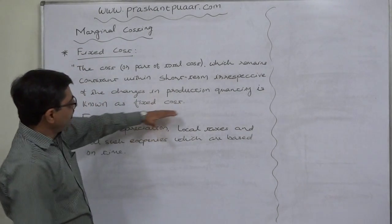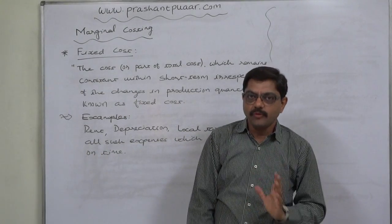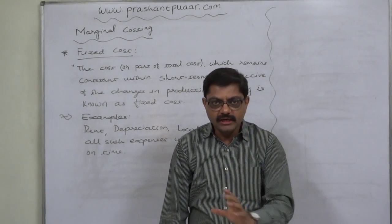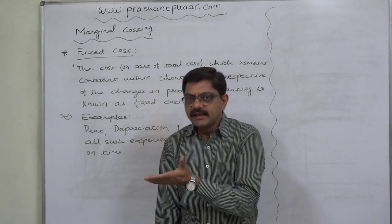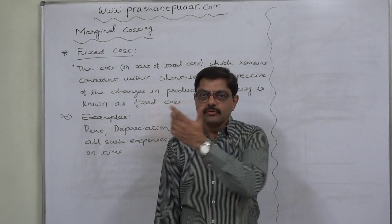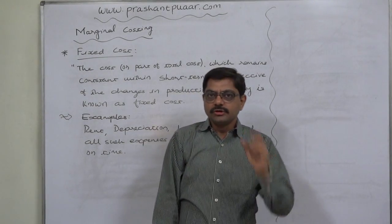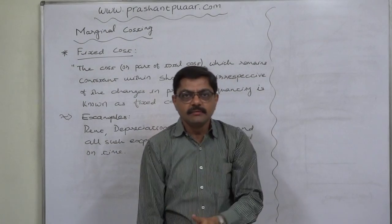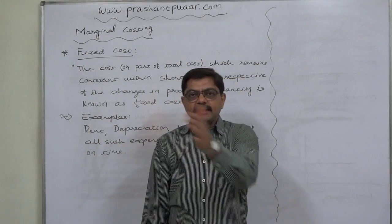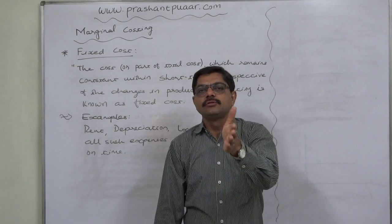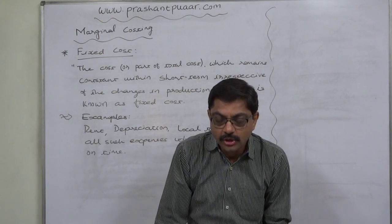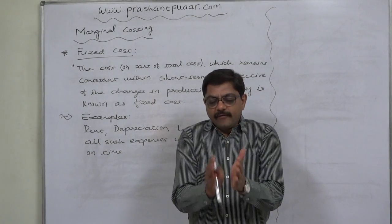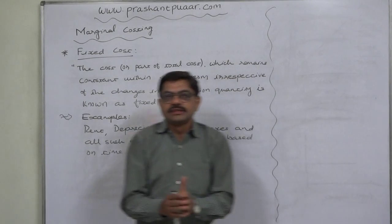The name 'fixed cost' refers to the total amount of such cost remaining constant. The average amount of fixed cost per unit doesn't remain constant. In January, we produced 10,000 units with total fixed cost of 10,000 rupees, so the average is 1 rupee per unit. In February, the cost was still 10,000 but we produced only 8,000 units, so the average becomes 10,000 divided by 8,000 — that is 1.25 rupees per unit.